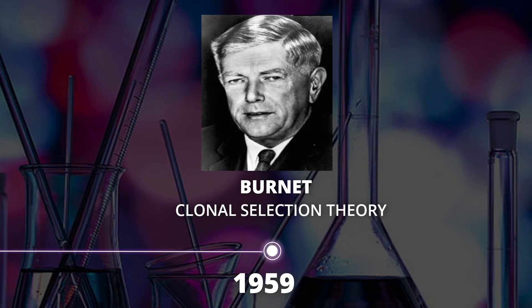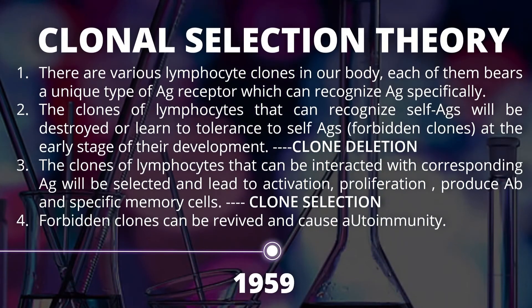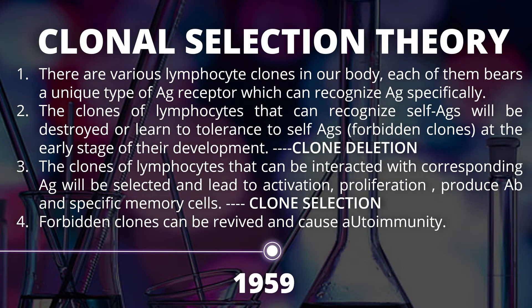The clonal selection theory states that there are various lymphocyte clones in our body, each bearing a unique type of antigen receptor that can recognize antigens specifically. Clones that recognize self-antigens will be destroyed or learn tolerance — called clone deletion — at the early stage of development. Clones that interact with a corresponding antigen will be selected, leading to activation, proliferation, antibody production, and specific memory cells — called clone selection. Forbidden clones can be revived and cause autoimmunity.